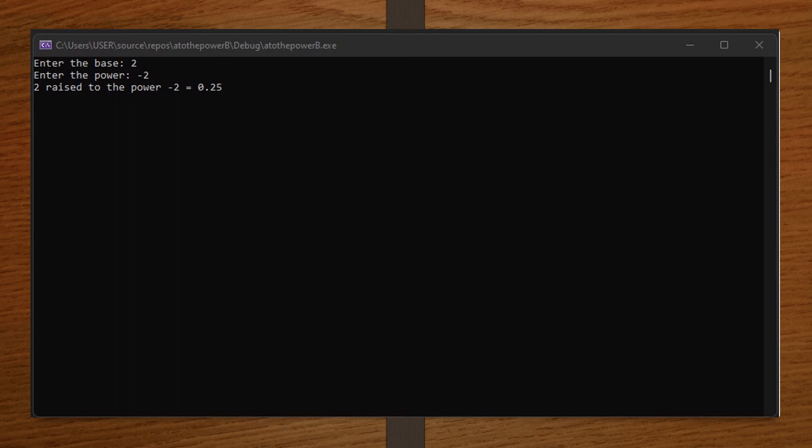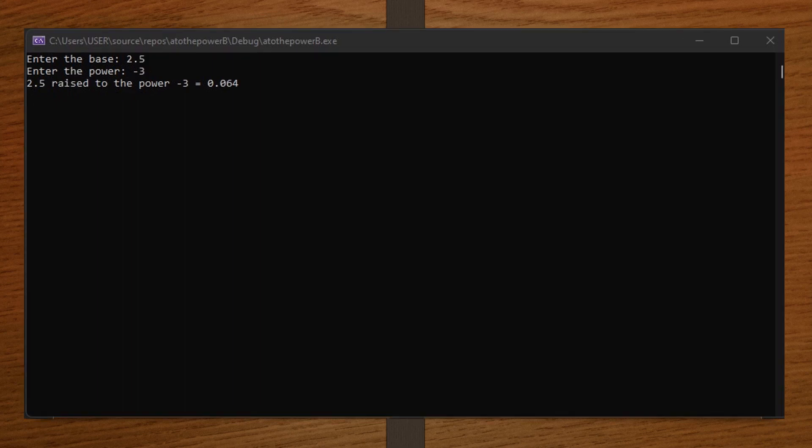Let's take the last one. The base to be 2.5 which is now a real number and then the base to be negative 3, an integer. Then, we have 0.064. Alright friends, you can do computations for this on your calculator.